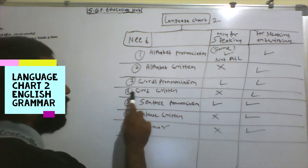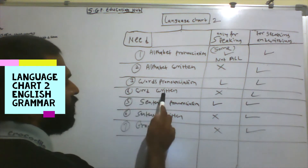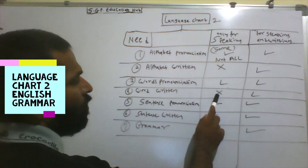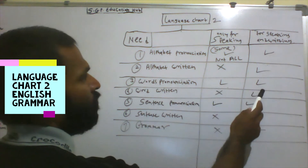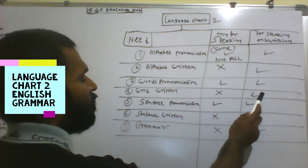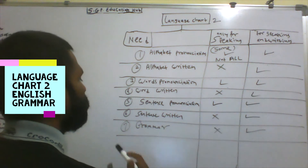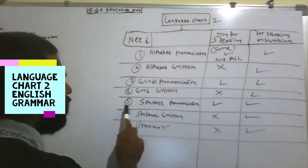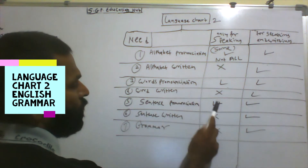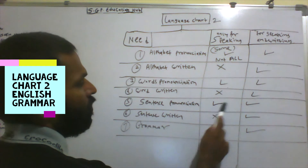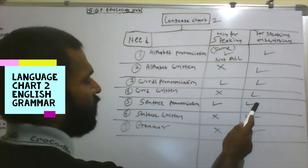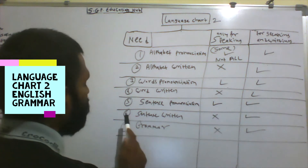The fourth point is word written. There is no need to write words if you are only speaking. But for both speaking and writing, all words need to be written. The fifth point is sentence pronunciation — this is needed for both speaking only and for speaking and writing.